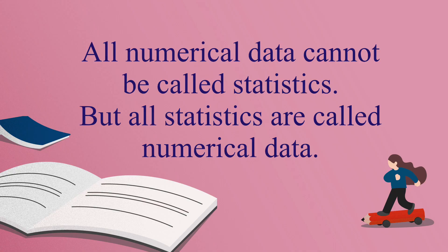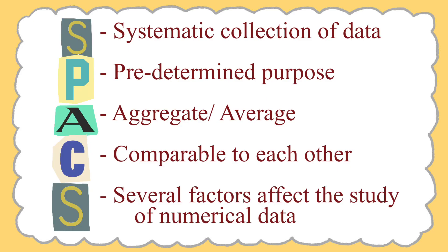Here is an important statement which you must remember: all numerical data cannot be called statistics, but all statistics are called numerical data. C in SPICS stands for comparable to each other. In statistics, data is collected for the purpose of comparison. Therefore, it is essential that the collected data is homogeneous. S means several factors affect the study of numerical data. For example, an increase in the price of a good is not the result of a change in one factor, but a result of many factors.